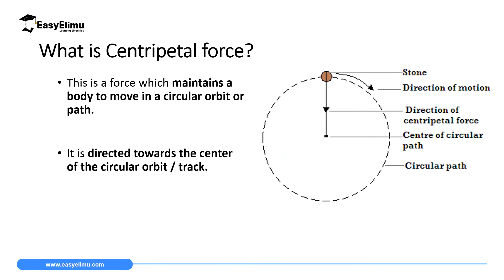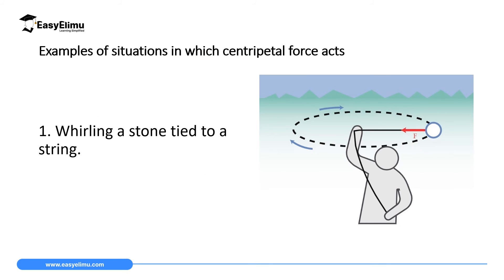The second force we discuss in this lesson is centripetal force. Centripetal force is defined as a force which maintains a body to move in a circular orbit or circular path. It is directed towards the center of the orbit or circular path. For example, if you tie a stone on a rope and whirl it, it rotates forming a continuous circular path, and the force maintaining it on that path is called centripetal force, acting towards the center of the circle.